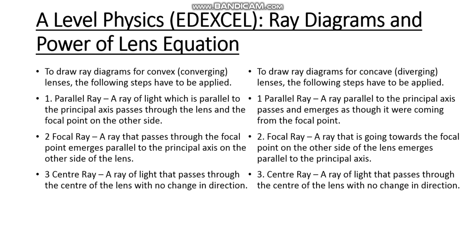For concave diverging lenses the following steps apply. Step one: the parallel ray — a ray of light parallel to the principal axis passes and emerges as though it were coming from the focal point. Step two: the focal ray — a ray going towards the focal point on the other side of the lens emerges parallel to the principal axis. Step three: the center ray — a ray of light that passes through the center of the lens with no change in direction. You don't necessarily have to use all three steps; two steps are sufficient to determine the location of the image.